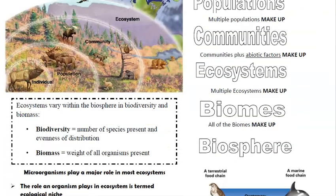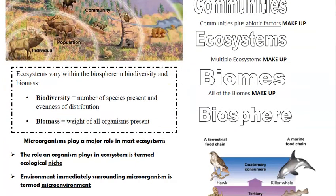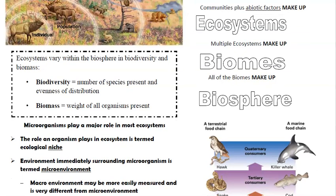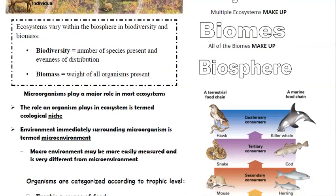Ecosystems vary within the biosphere in biodiversity and biomass. Biodiversity is the number of species present and their evenness of distribution — are they clumped, scattered, or randomly distributed? Biomass is the weight of all the organisms present in the ecosystem.